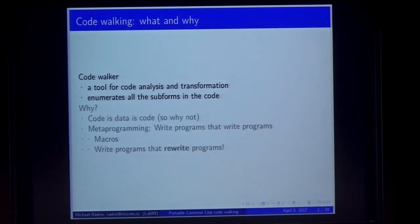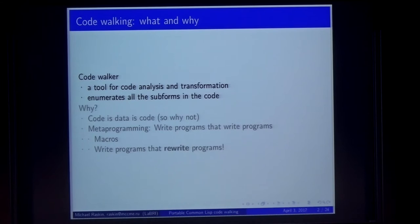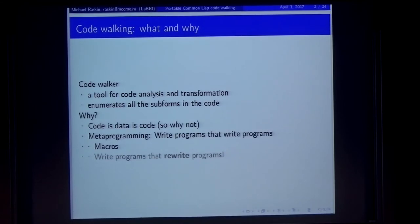So, code walking — what is it and why do we want it? Code walking is a tool for code analysis and code transformation. The core feature of code walking is elaborating all the executable subforms in an expression, and then doing the analysis and transformation that we want it to do. It can be a different thing.